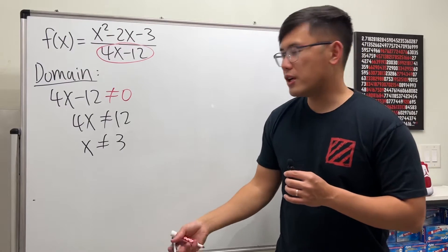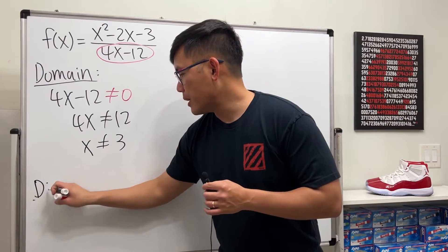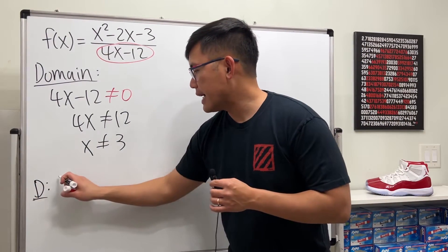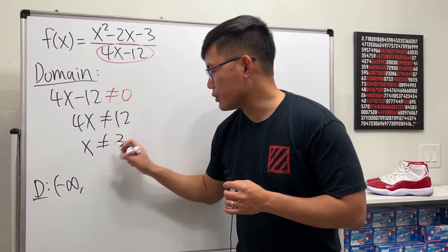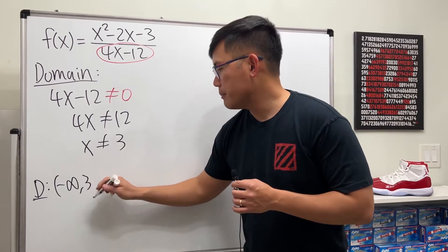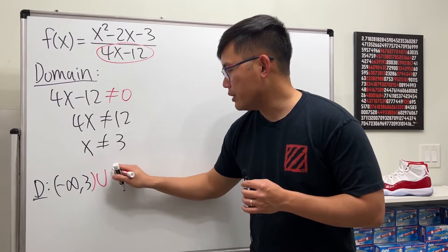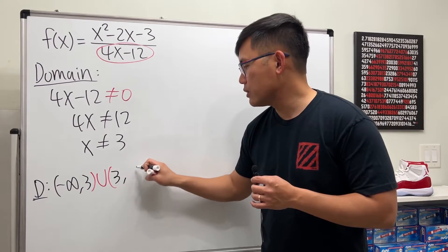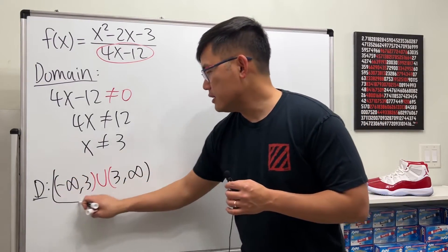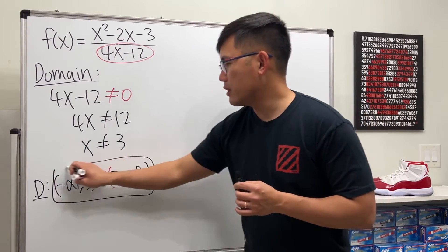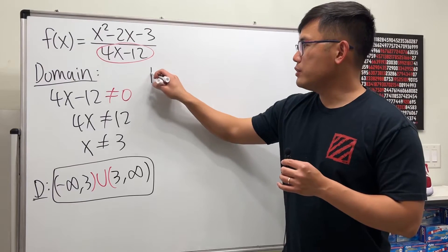Dividing both sides by 4, x cannot be equal to 3 — that's the restriction. So the domain is from negative infinity to 3, not including 3, union 3 to infinity. Done.